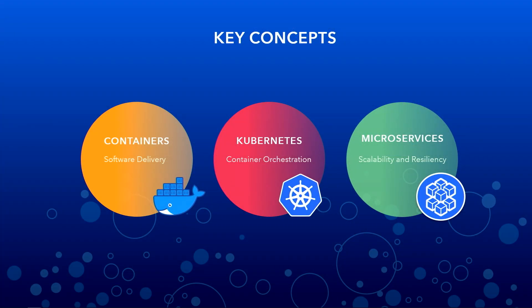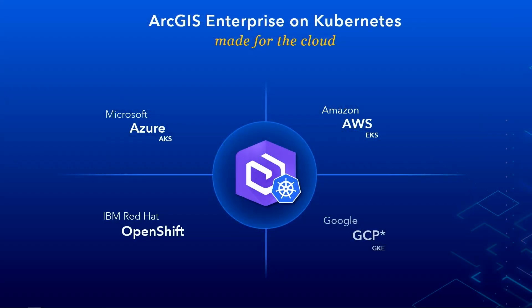But you might ask, where did we spend and invest most of our efforts? It's to break down all the capabilities of enterprise GIS into small managed microservices — units of functionality that can be distributed and scaled massively. We architected a complete GIS system that's cloud-native by design, made for your enterprise cloud, whether it's on-premises, in your private cloud, or in your public cloud.